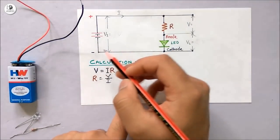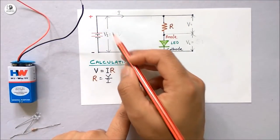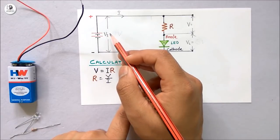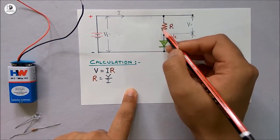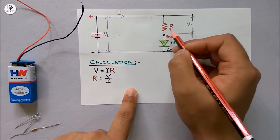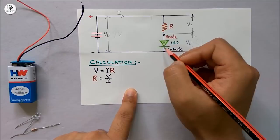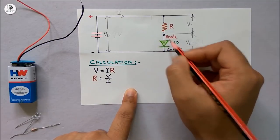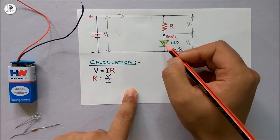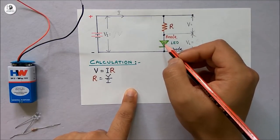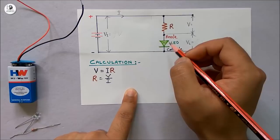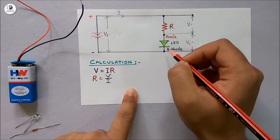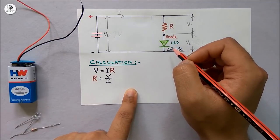In this schematic, you can see this is the input voltage VI, and I have used a resistance R in series with the LED to limit the current within 30 milliampere, as the current rating of this LED is 30 milliampere.